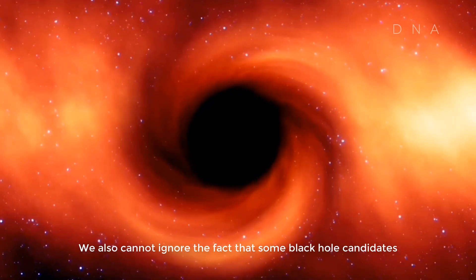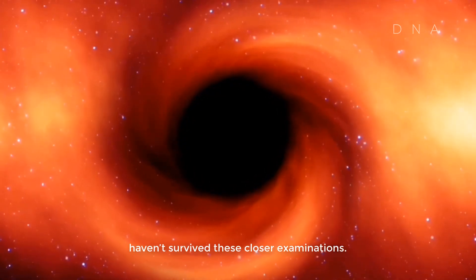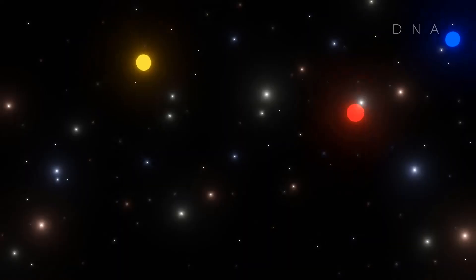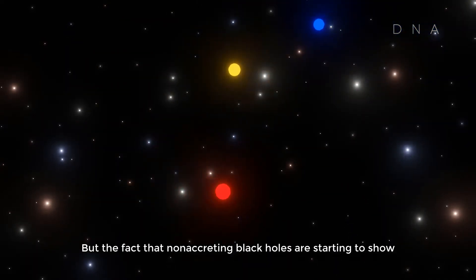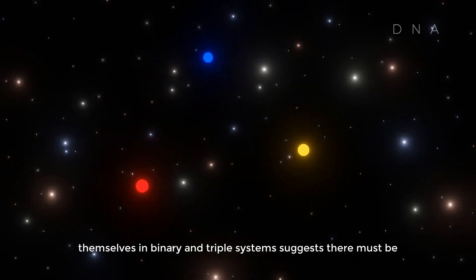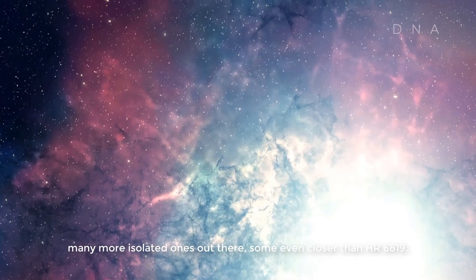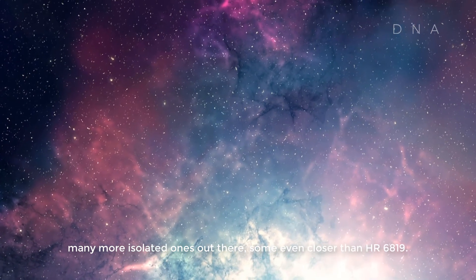We also cannot ignore the fact that some of the black hole candidates haven't survived these closer examinations. But the fact that these non-accreting black holes are starting to show themselves in binaries and triple systems suggests that there must be many more isolated ones out there, some even closer than HR 6819.